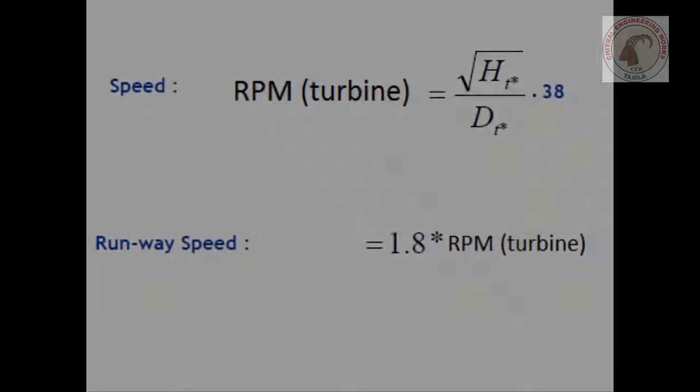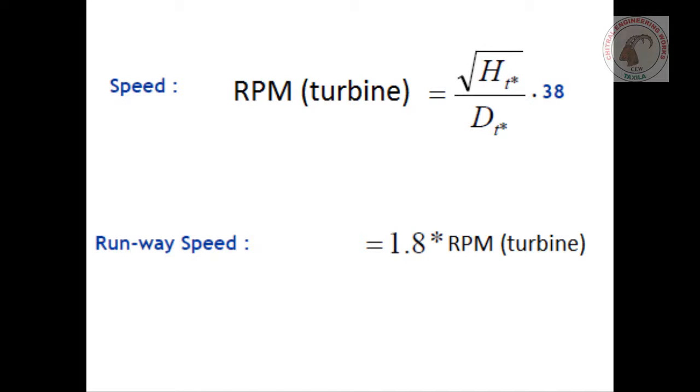Measuring speed of the turbine. Turbine speed and runaway speed can be evaluated by these formulas. The maximum speed of turbine at full flow without any load is called runaway speed.